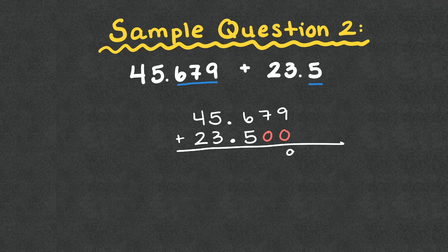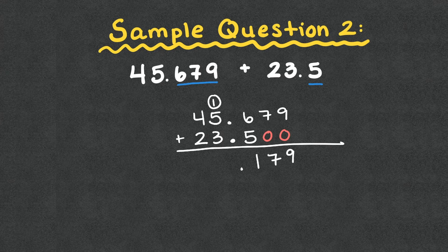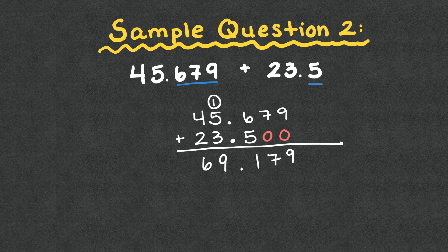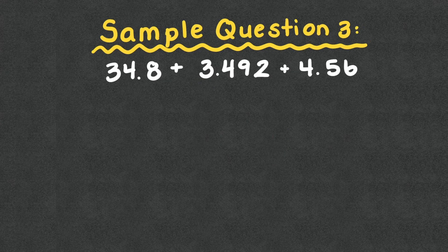So 9 plus 0 is 9. 7 plus 0 is 7. 6 plus 5 is 11. Drop the 1. Carry the 1. 1 plus 5 is 6. Plus 3 is 9. And 4 plus 2 is 6. So right here, we do have our answer of 69 and 179 thousandths.